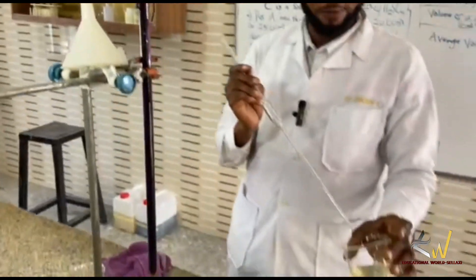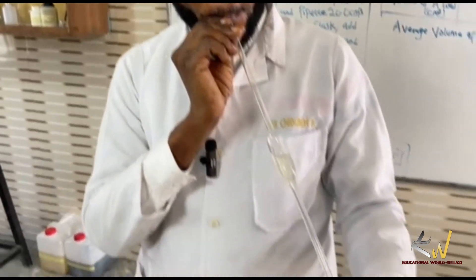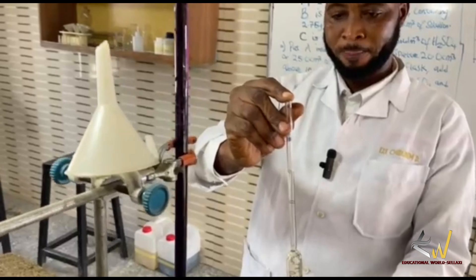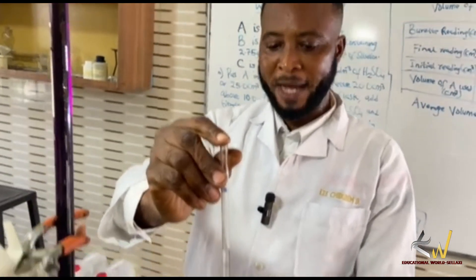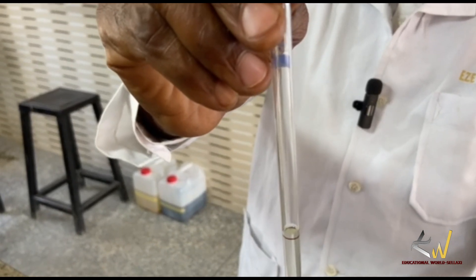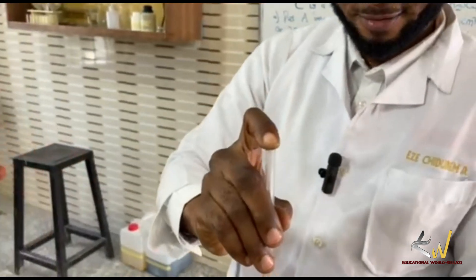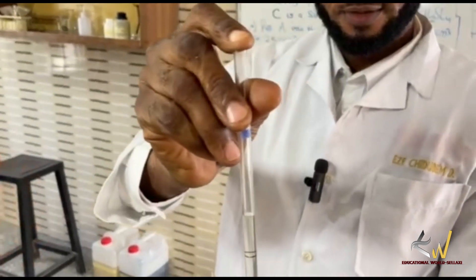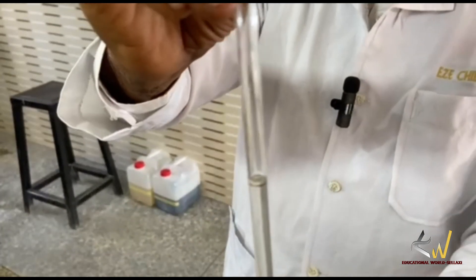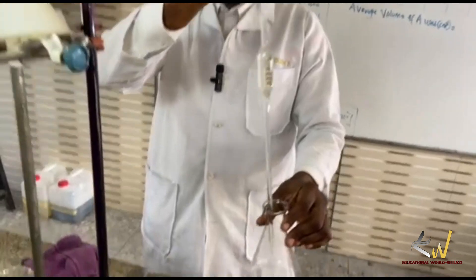Watch me as I do this — it is very simple. You should be very careful. I want to calibrate the pipette to the mark. We are using a 25.00 cm³ pipette. Release your hands so that it goes down to the mark. That is the mark — it's dead on.